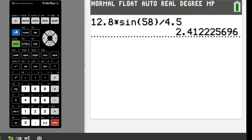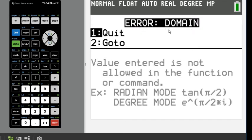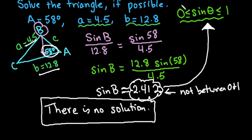If I try to plug into my calculator just to show you that it does give me a domain error, if I hit second, sine, and second of the answer, so it's plugging this value in, when I hit enter, it gives me an error. It says the domain, it does not work. So the value entered is not allowed in the function or command. So if you forget this rule, when you try to plug it into your calculator to solve for B by doing the inverse sine of this value, it's going to remind you that it doesn't work.